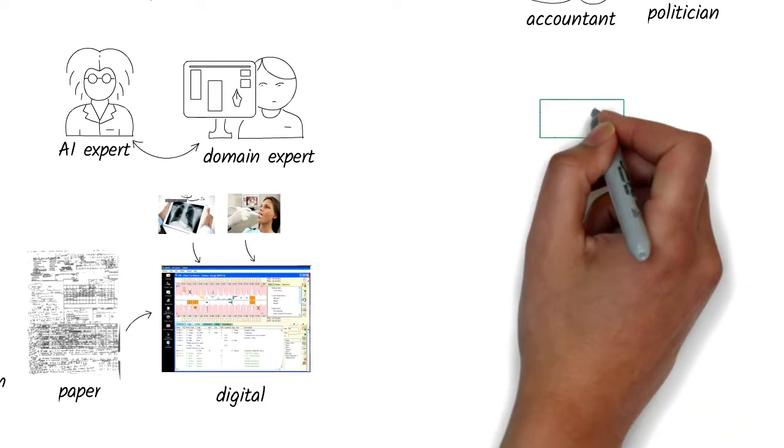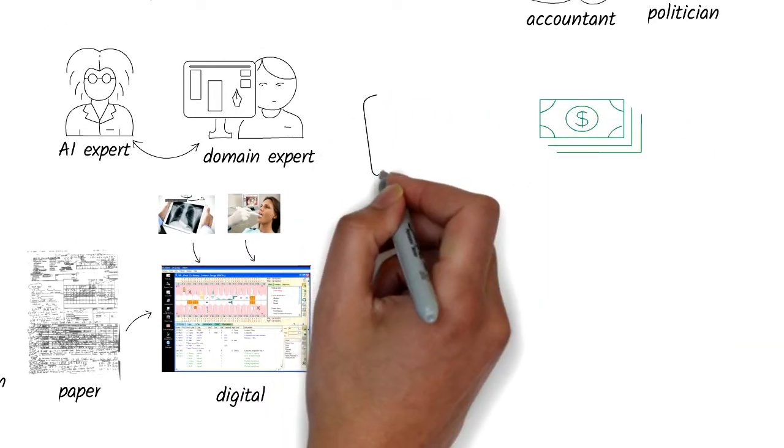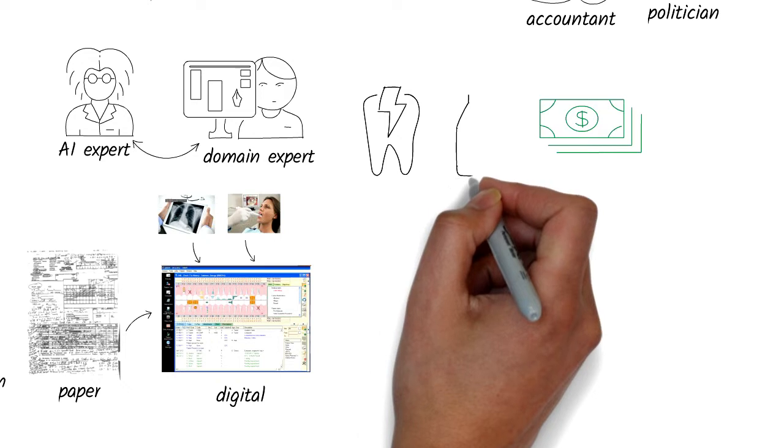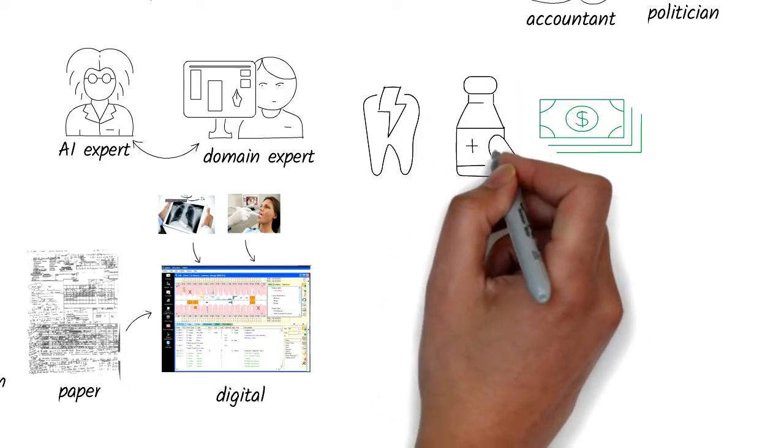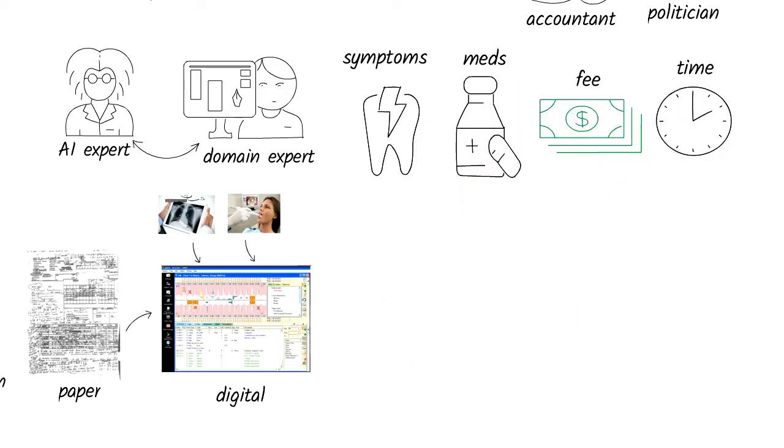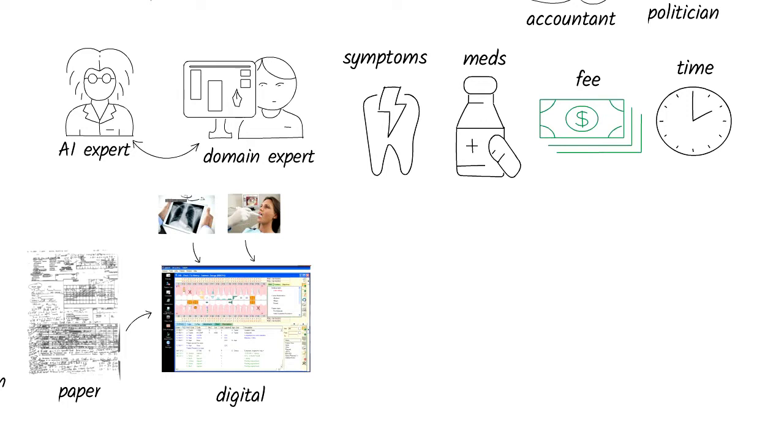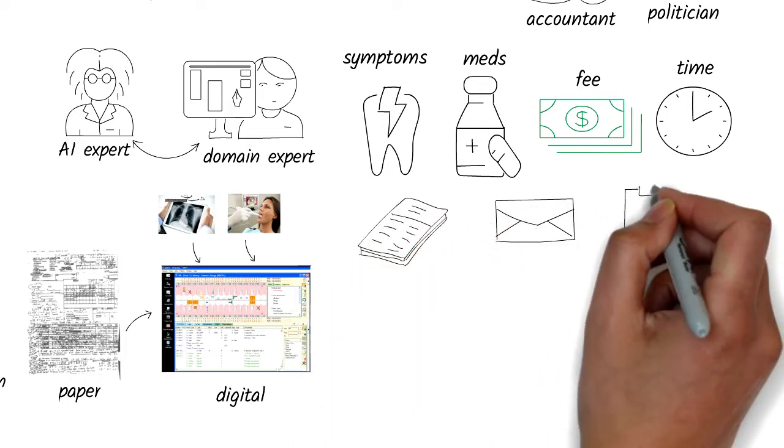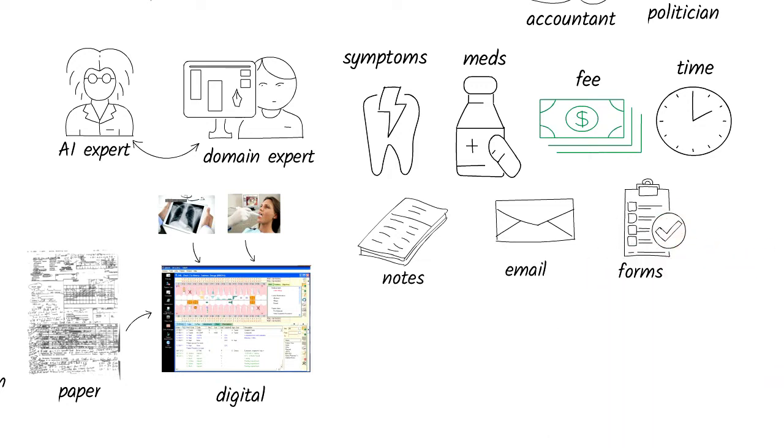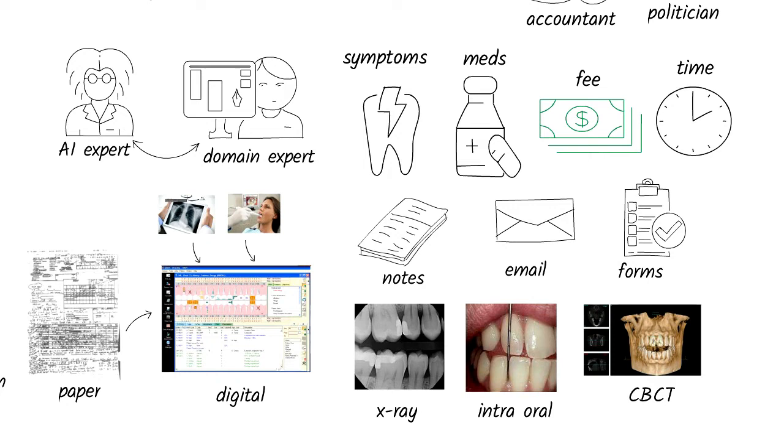Some of the data is categorical variables, such as patient symptoms, medications, etc. Some of them are numerical, such as the fee paid, time taken for procedures, and so on. Some are unstructured or semi-structured, like the doctor's notes, email, and patient forms. Some others are images like x-rays, intraoral images, or CBCT scans.